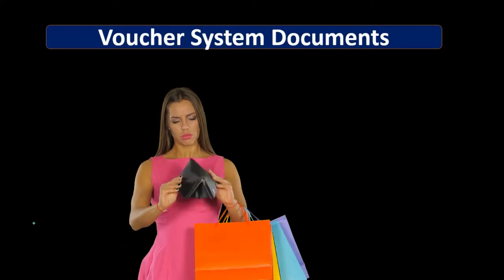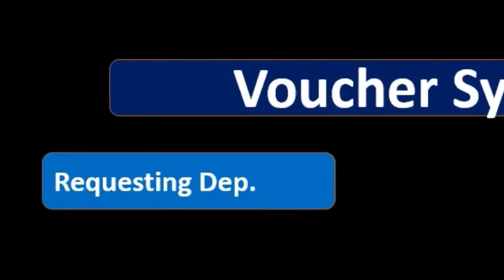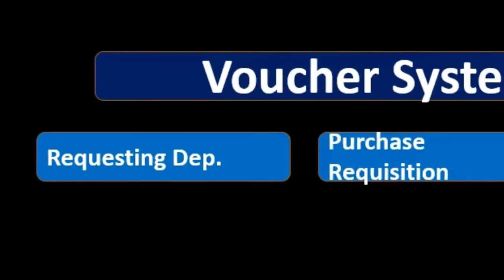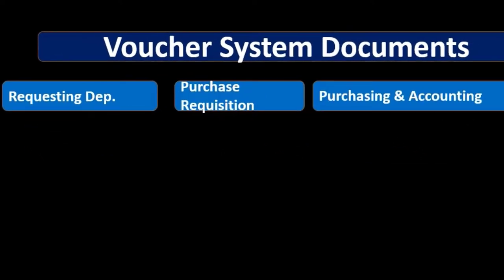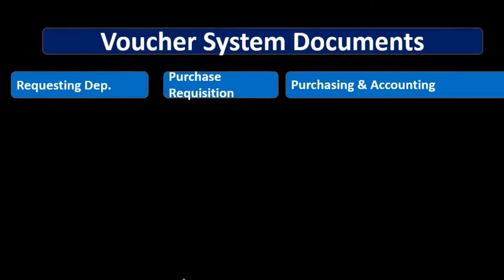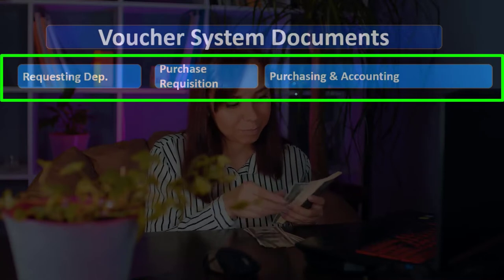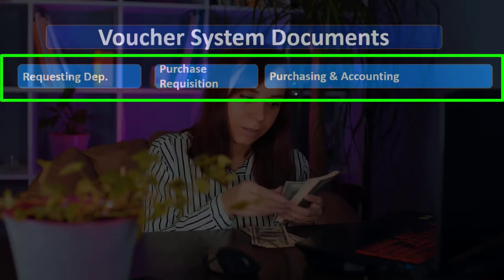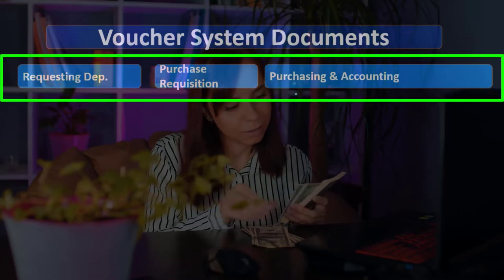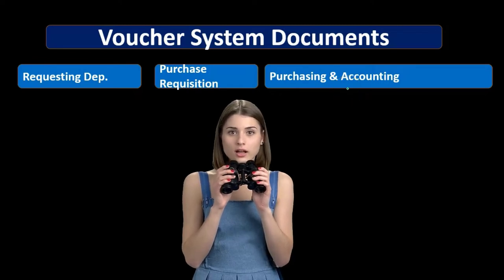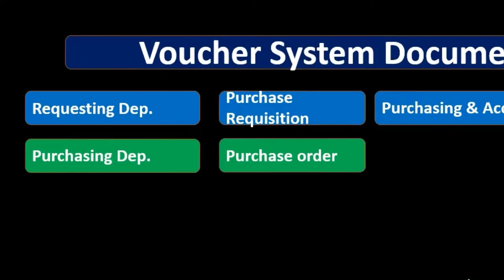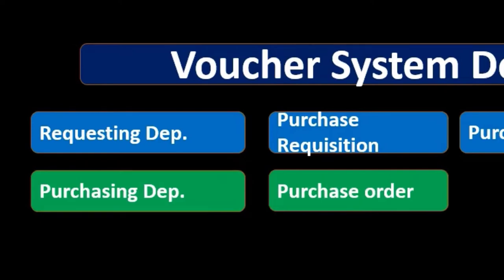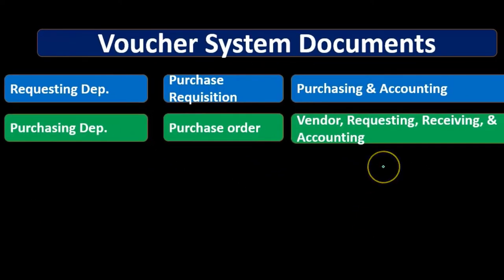A voucher system example may look something like this. We might have some department requesting a purchase — something needs to be purchased. We'll have the form of a purchase request going to the purchasing department and the accounting department. The purchasing department is typically its own department, the only one authorized to approve the purchasing process. The accounting department will ultimately record the information. Then the purchasing department will create the purchase order, which goes to the vendor as well as the requesting department.